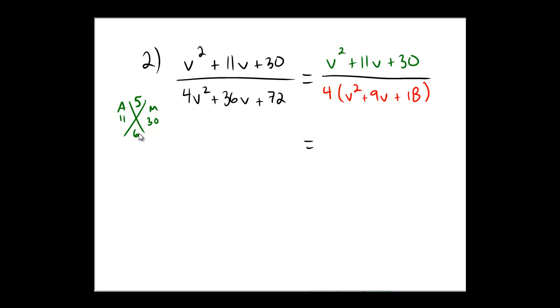Two numbers that multiply to be 30 add to be 11. Oh, notice 5 and 6 work. 5 times 6 is 30. 5 plus 6 is 11. So the numerator would be v plus 5, v plus 6.